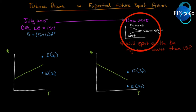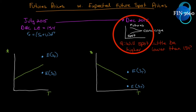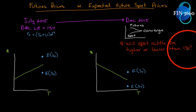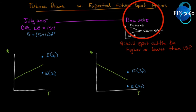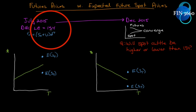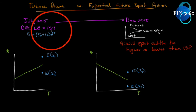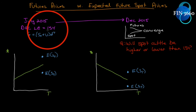Will spot cattle be higher or lower than 154 in December? If I anticipated spot cattle would be higher in December, I never would have shorted at 154 — I would have gone long. I expected that by the time we get to December, the spot price on live cattle will be less than 154. At the time of recording, spot cattle is around 142, so I'm in the money — not as much as I thought, but I have some breathing room.